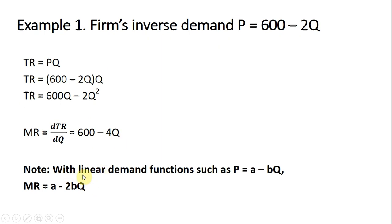One thing to keep in mind, note with a linear demand function such as P equals A minus BQ, marginal revenue will be an equation that will have a slope that is twice as steep. So 600 minus 2Q